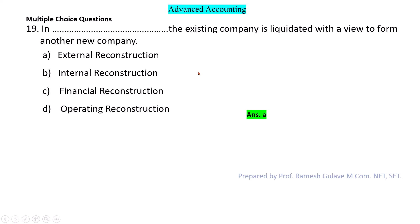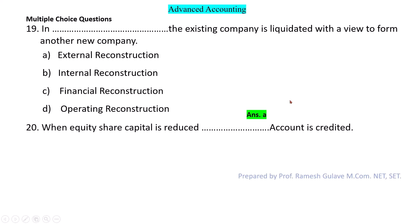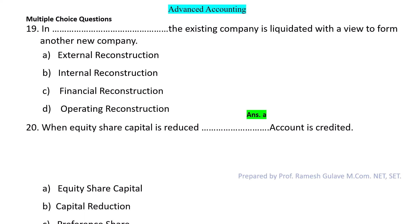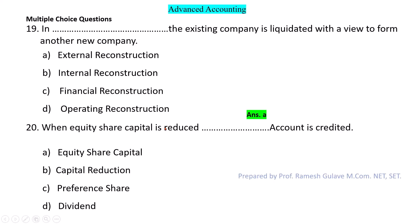In external reconstruction, the existing company is liquidated with a view to form another new company. Next question: When equity share capital is reduced, which account is credited? This question is related to the internal reconstruction of the company. Option B is the right answer.